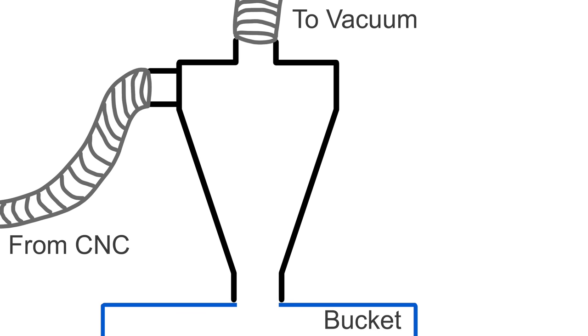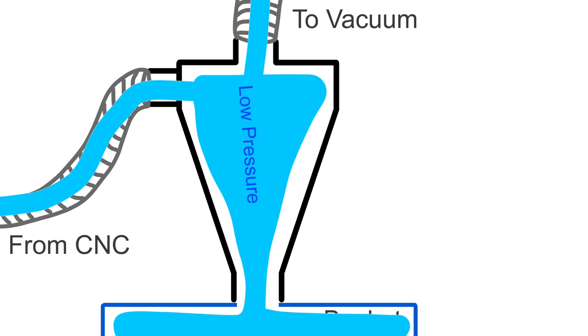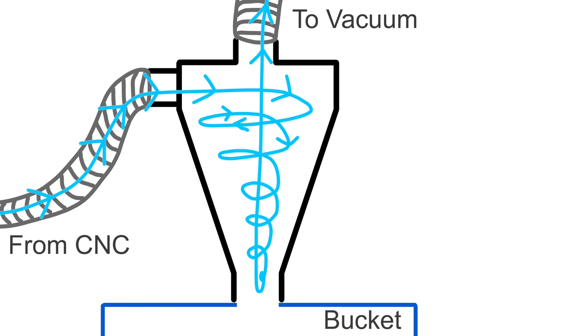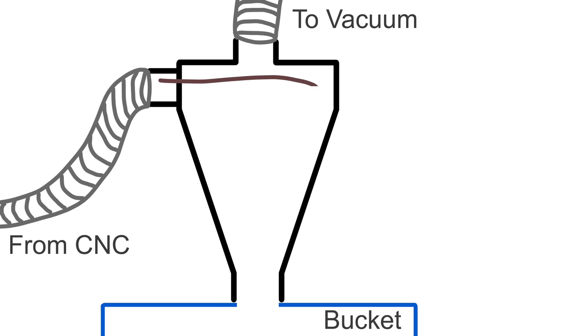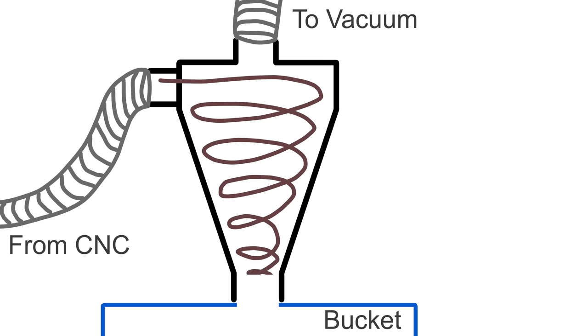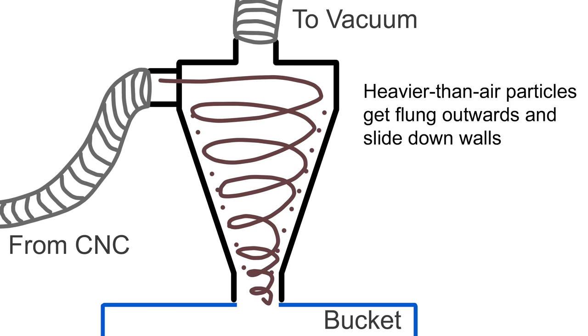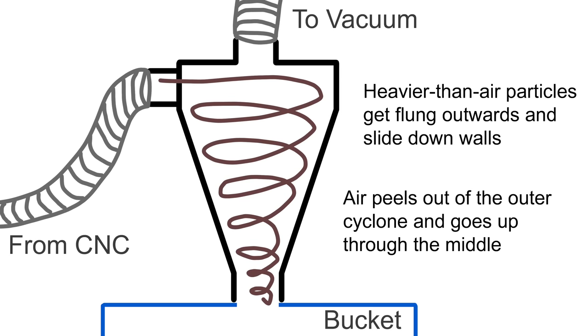Before we start on the new design, let's talk about how cyclone separators work. The vacuum sucks in air and creates a low pressure in the whole thing. This makes air and dust flow in through the tube. One key thing to keep in mind is that the bucket is sealed off so that no outside air can flow in. This prevents any air or dust from getting sucked up from the bucket into the vacuum. When the air enters the cone from the side, it spins around like a tornado. Since solids are heavier than air, they get flung outwards due to centrifugal force and spiral down into the bucket. The air is more immune from the centrifugal force than the dust, so it peels away from the walls and spirals upwards to the vacuum.